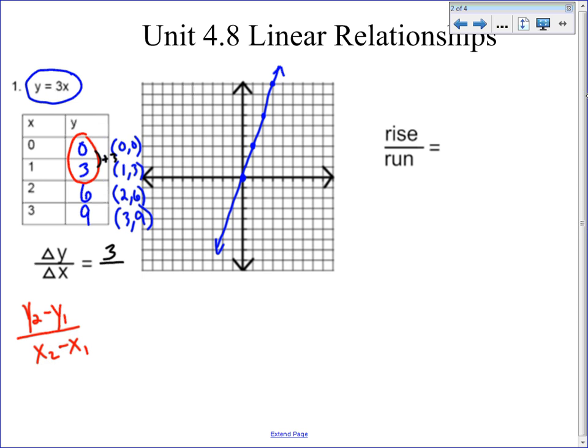Now the changes in x's, again, it doesn't matter where you look. It's either going to be zero to one, one to two, or two to three. But no matter where you look, the changes are going to be plus one. So if the changes in y's are three and the changes in x's are one, then our slope is three over one, which is three.